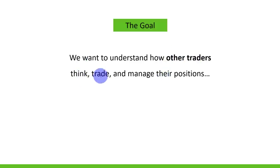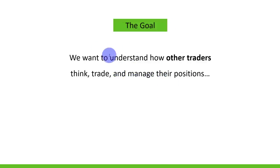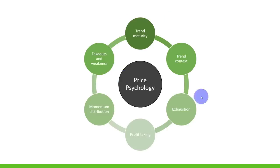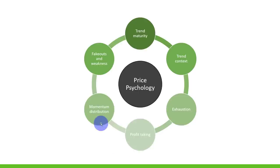So where do they get in? Where do they get out? Where do they feel pain in their positions? Where do they feel greed? To understand that on a chart, we're going to look at different concepts: trend maturity, trend context, exhaustion, profit taking, momentum distributions, fake outs, and weaknesses.